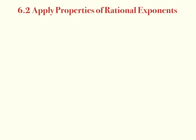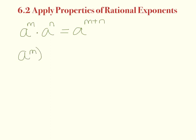As a review: if you have a to the n power multiplied by a to a different power, since the bases are the same, we just add our exponents — a to the n plus n. If we have a to the m raised to another power n, that's a power to a power, and you multiply m times n.